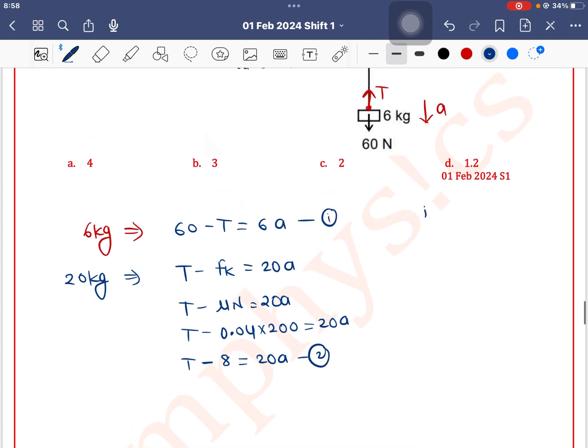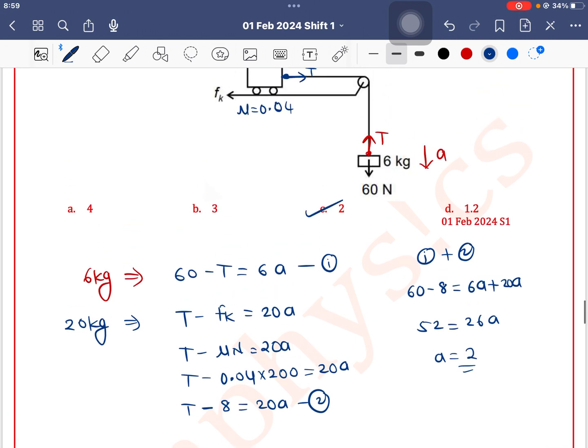If we add equation 1 and 2, tension will cancel out. So 60 minus 8 is equal to 6a plus 20a. So 60 minus 8 is 52, and this is 26a. So a is equal to 52 by 26 is 2. So option c is the correct one.